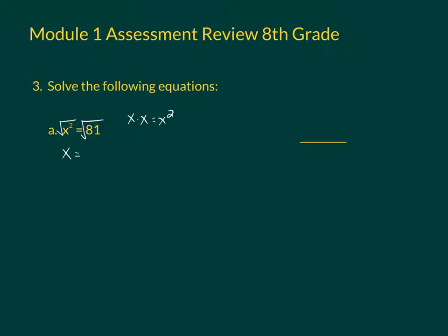And that's equal to the square root of 81. We know the square root of 81 — what number times itself gives you 81 — is 9. However, you have to remember in this situation that it could be a positive 9 or a negative 9. So we have that plus or minus sign. You can write 9 and comma negative 9, or you can write the plus or minus sign and then the 9. So those mean the same thing.